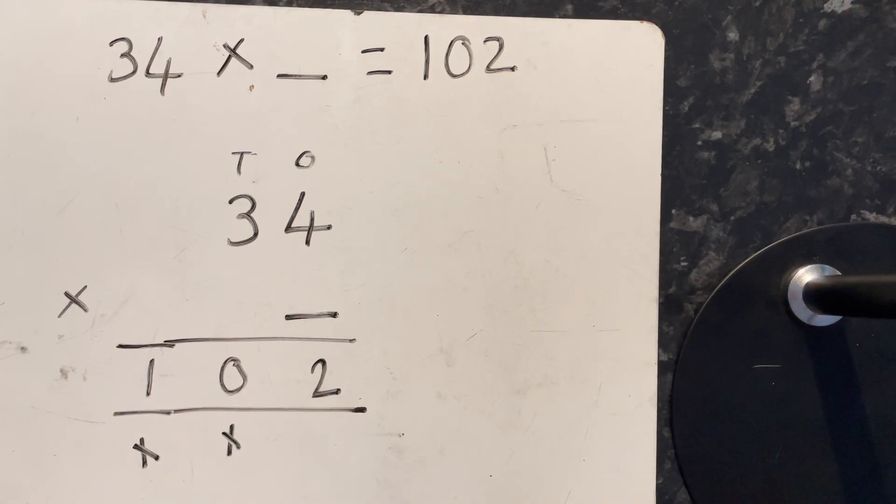I'm going to talk you through how to work out a two-digit times a one-digit question where it has a missing number, so we actually don't know what the one-digit number we're multiplying 34 by.